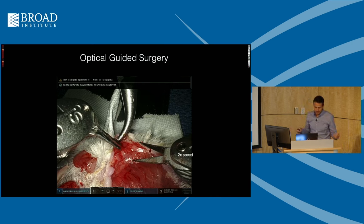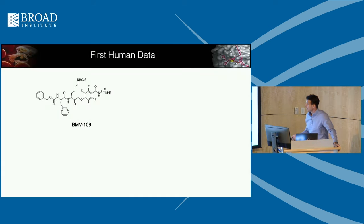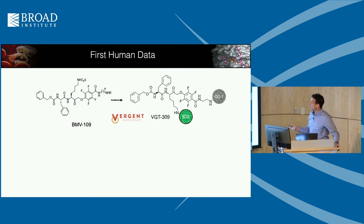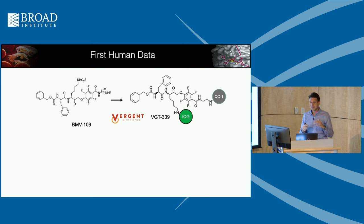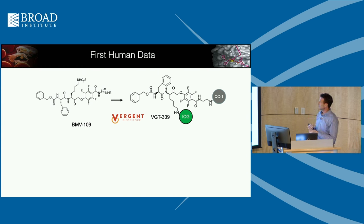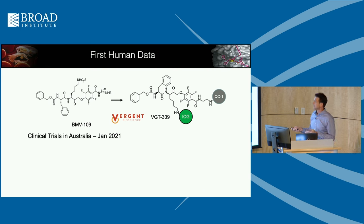You can see how in scenarios where you think you got everything, you really didn't. That's the real benefit of having contrast on board. So we took a molecule called BMV-109 developed by one of my postdocs, which had a Cy5 fluorophore and a suitable quencher. We then swapped it out for ICG — the high-wavelength dye approved by the FDA — which is what all instruments are tuned for. The resulting probe is now licensed by a company called Vergent Bioscience and is called BGT-309.